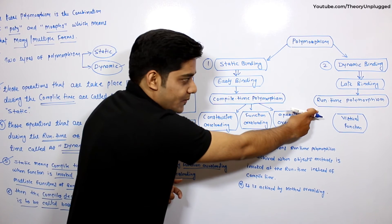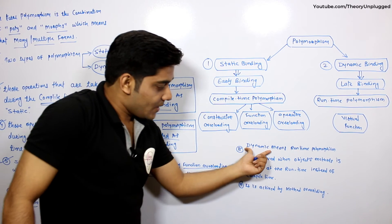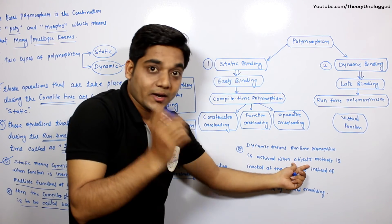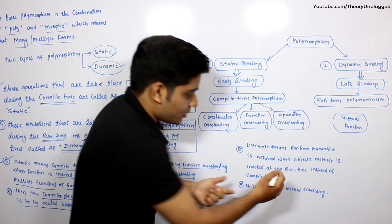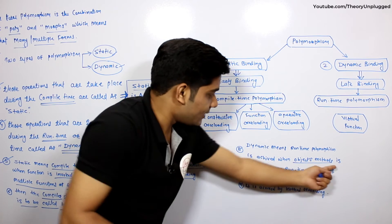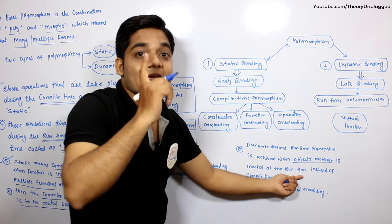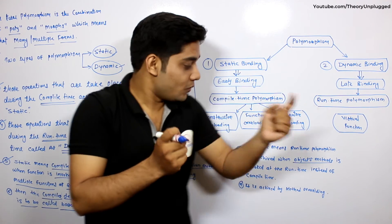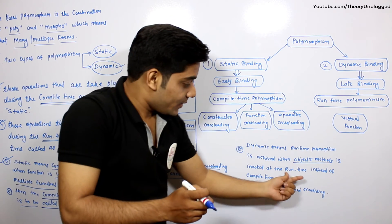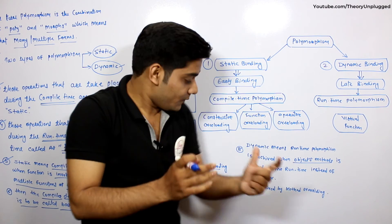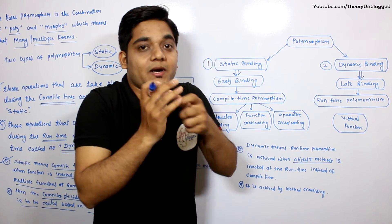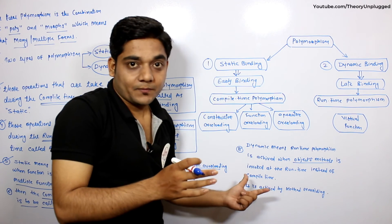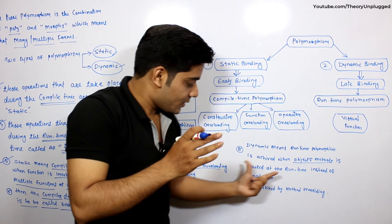Now talking about runtime polymorphism — dynamic means runtime polymorphism is achieved when an object's method is invoked at runtime instead of compile time.